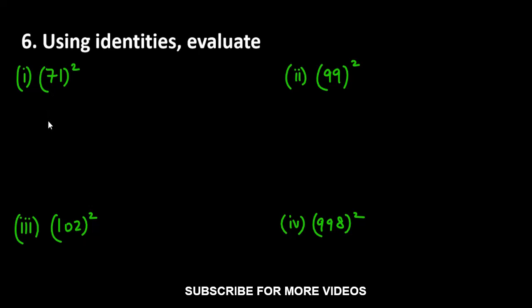Let's start with question number 6. It says using identities evaluate these values. We have some values and we have to solve them with identities. We don't have to square this directly. Let's see if we can use which identity in the first case.